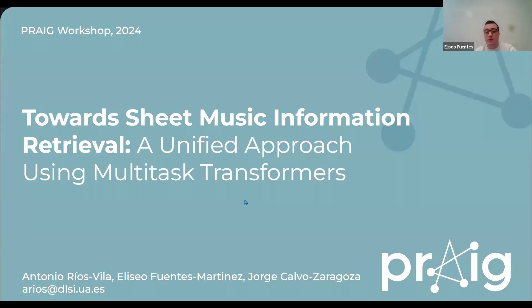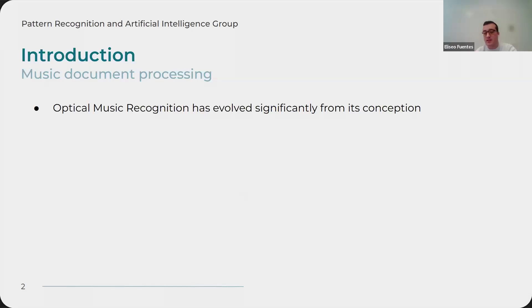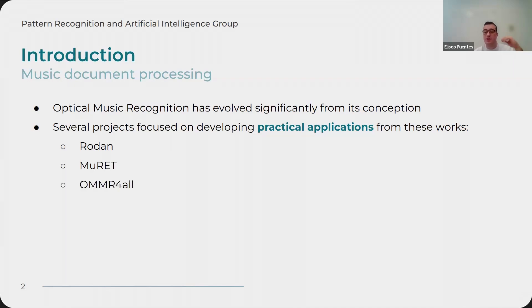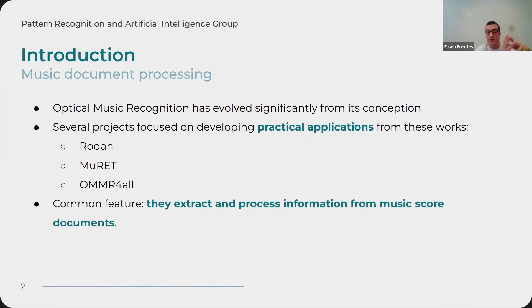When we process music documents, with all the evolution that optical music recognition has had, we usually tend to use practical applications that have risen from these works. We have examples like the Rodan system from McGill University, then Mouret, OMMR4L — which is also addressed in this workshop. They have a common feature: they extract and process several pieces of information from music score documents.